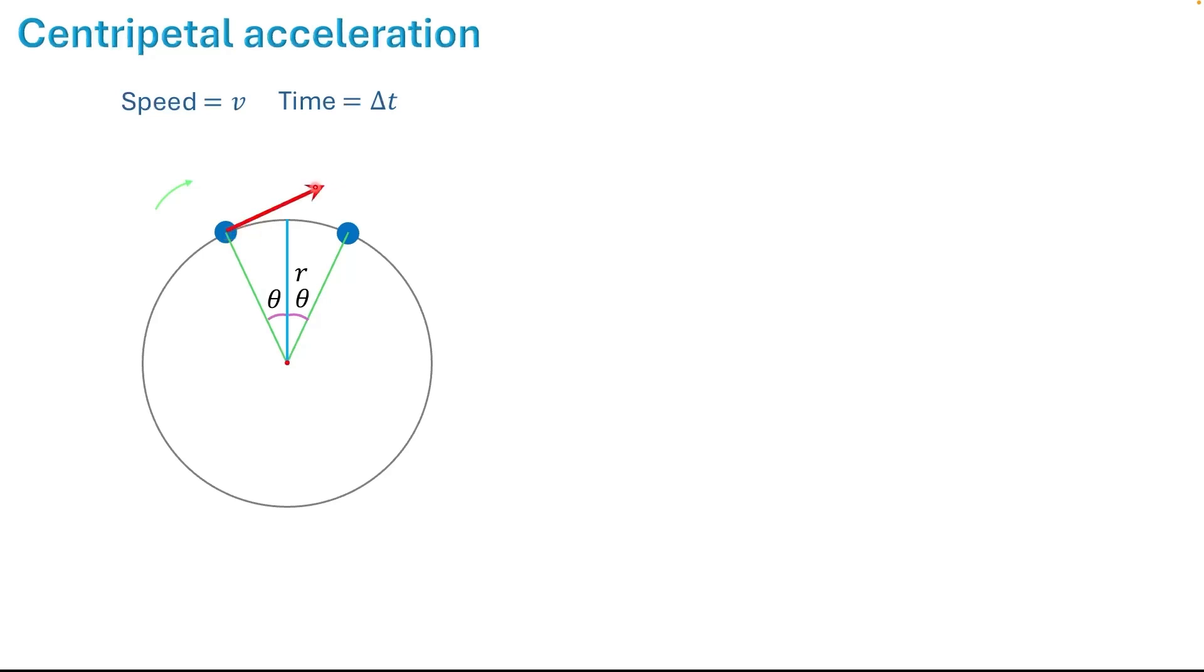The velocity of the object is tangent to the circle, so at this position, this is the velocity vector. I take this as the initial velocity, v1. And at this position, this is the velocity vector. I take this as the final velocity, v2. The magnitude of v1 is the speed. Since the speed is constant, the magnitude of v2 is also v.